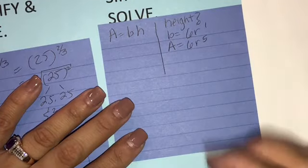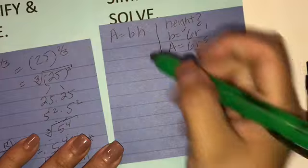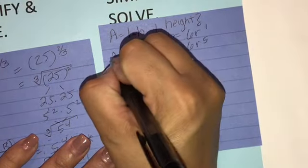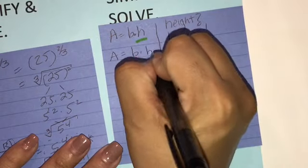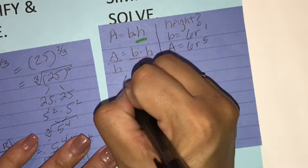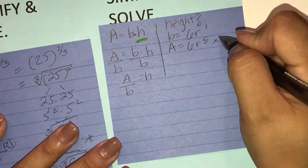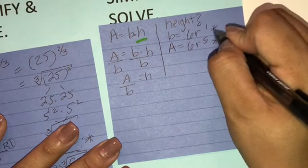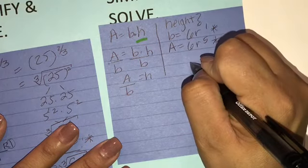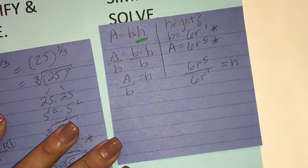So since this is my formula, I'm looking for height, which is right here. This is multiplication. So I'm going to say area equals base times height. I'm going to divide both sides by the base. So then I get height equals area divided by base. So that means I'm going to take my area right here and divide it by my base. So h will equal 6 r to the 5th divided by 6 r to the 1st.